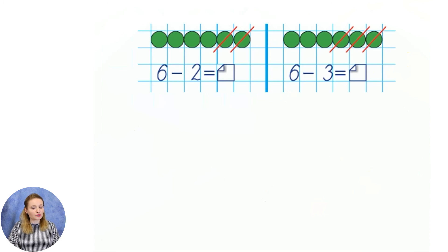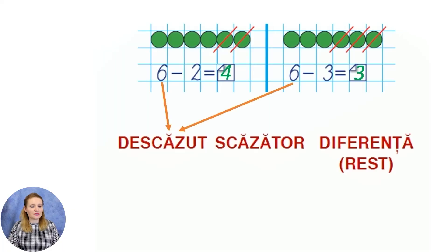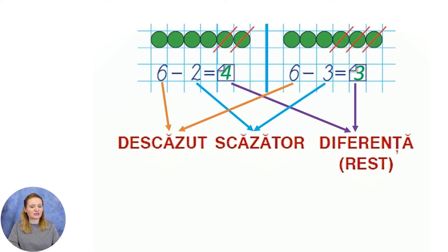Să calculăm exercițiile propuse observând și reprezentările lor. Cine știe care este rezultatul primului exercițiu de scădere? Șase minus doi este egal cu patru. Cine știe care este rezultatul celui de-al doilea exercițiu? Șase minus trei este egal cu trei. Care din numerele din aceste două exerciții reprezintă descăzutul? Șase și șase. Care reprezintă scăzătorul? Doi și trei.